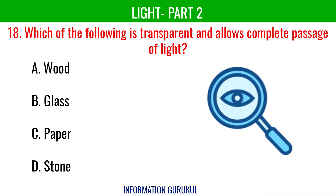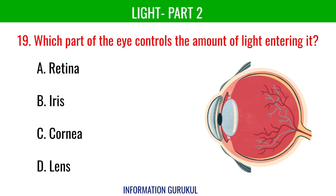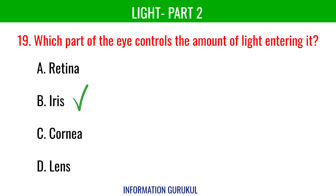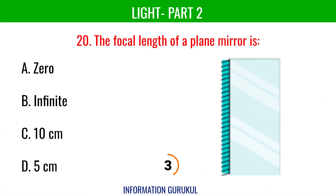Which of the following is transparent and allows complete passage of light? Glass. Which part of the eye controls the amount of light entering it? Iris. The focal length of a plane mirror is infinity.